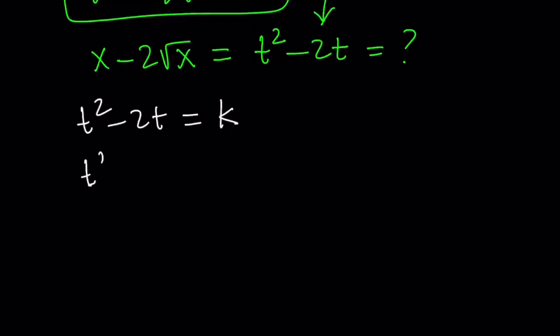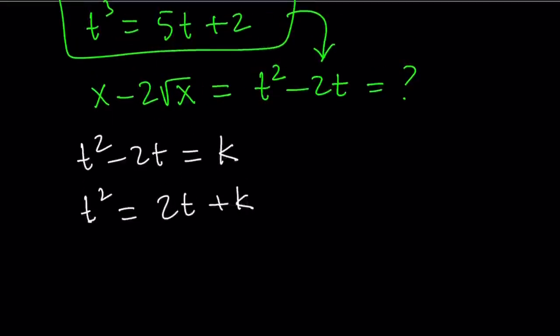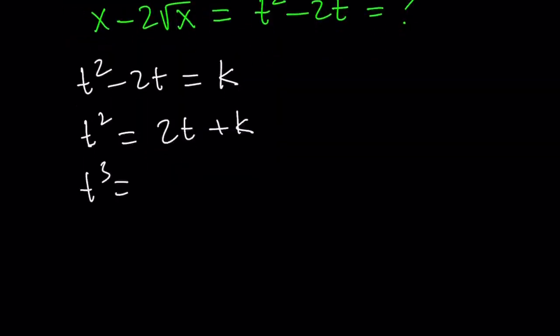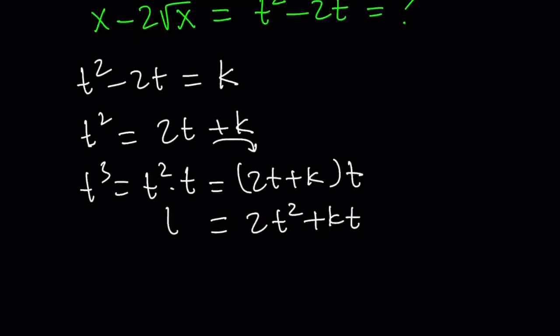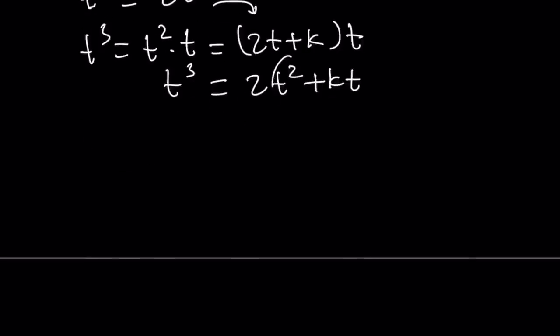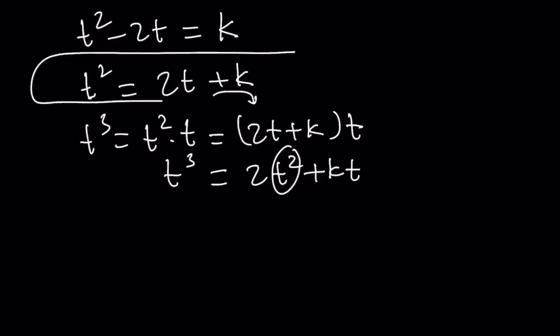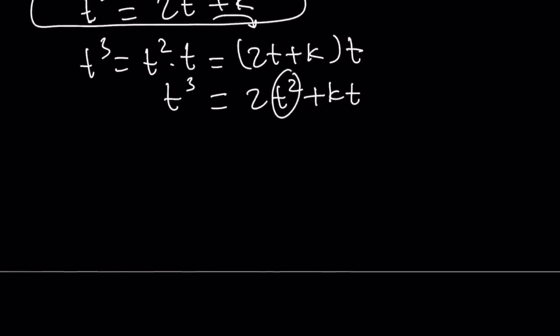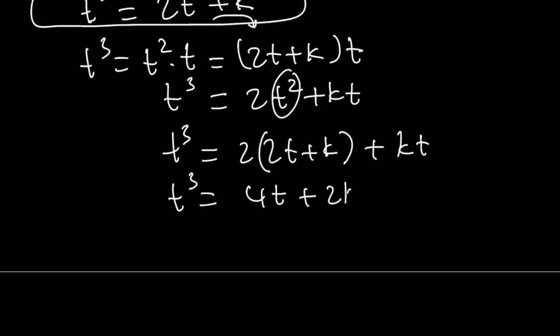Now, what do I know? I know that I can isolate t squared and write it as 2t plus k. And then, find t cubed from here. What is t cubed? t squared times t. Simple. So let's go ahead and multiply t squared, which is this, by t. And that's going to give us 2t squared plus kt. This is t cubed. But I can replace t squared with 2t plus k again. One more time. We've got to keep doing it. So t cubed can be written as 2 times 2t plus k plus kt. But t cubed then becomes 4t plus 2k plus kt.